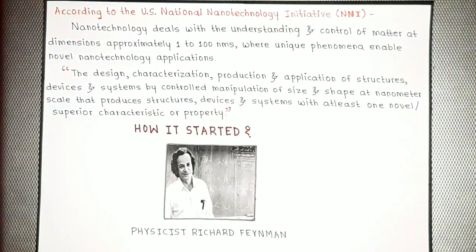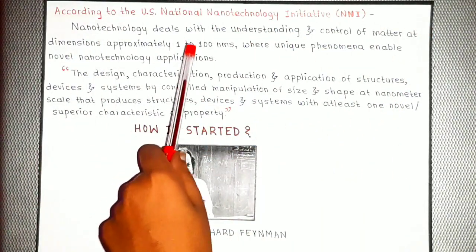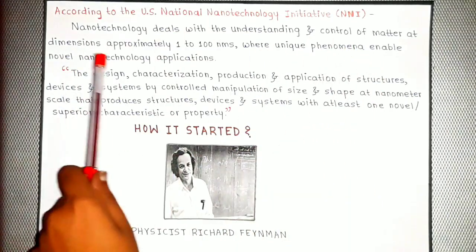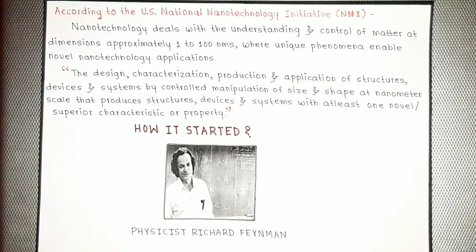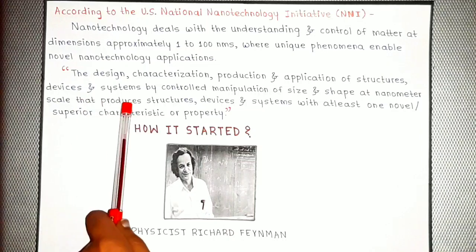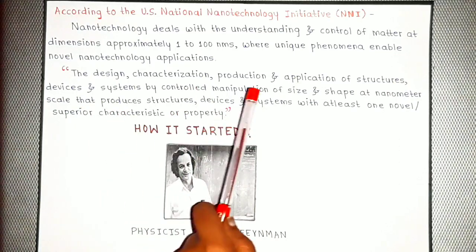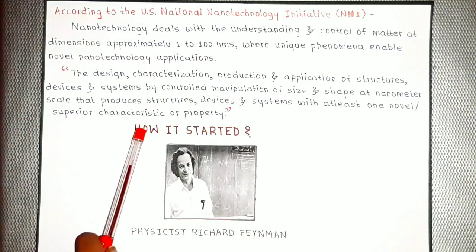Now that you know the basic definitions, let's take a look at the standard definitions. The US National Nanotechnology Initiative defines nanotechnology as dealing with the understanding and control of matter at dimensions approximately 1 to 100 nanometers, where unique phenomena enable novel nanotechnology applications. Another good definition states: the design, characterization, production, and application of structures, devices, and systems by controlled manipulation of size and shape at the nanometer scale that produces structures, devices, and systems with at least one novel or superior characteristic or property.